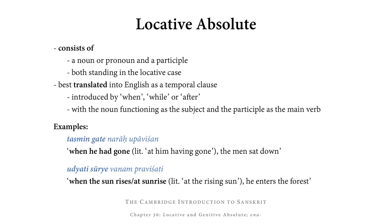For example: tasmin gate naraḥ upaviśan. Naraḥ upaviśan simply means 'the men sat down,' and they sat down tasmin gate. Tasmin is the locative masculine singular of tat meaning 'he,' and gate is the locative masculine singular of gata, the past passive participle of gam, 'to go.' Gata means 'having gone.' So tasmin gate is basically 'he having gone' in the locative. This is difficult to translate literally and still make sense of, so we can say 'when he had gone, the men sat down.'